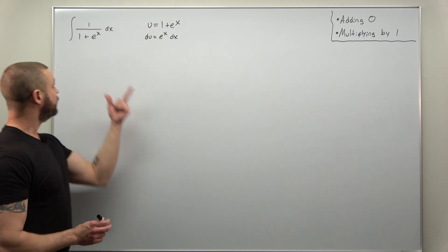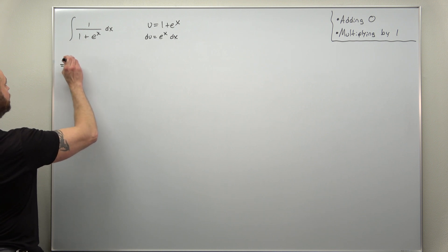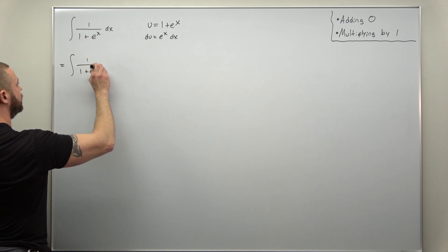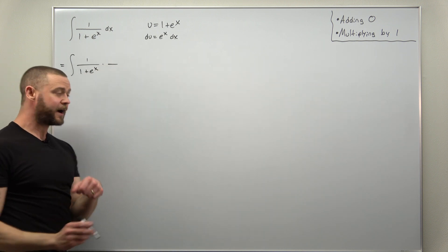So let me go ahead and rewrite this multiplying by one, where we're thinking of one as e to the x divided by itself.